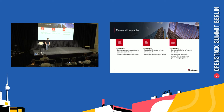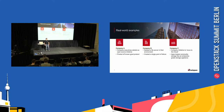Company B needed a file server in their environment. So, they spun up a virtual machine, created a Cinder LVM volume, attached it, and called it good. Unfortunately, this created a single point of failure in their environment because all of their applications relied on this file server. So, whenever the hypervisor went down or the Cinder node hosting the backing volume went down, their entire cloud was effectively down.